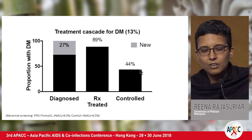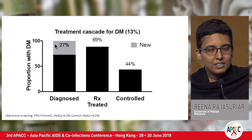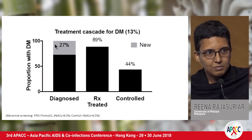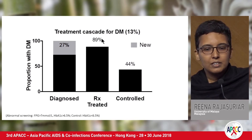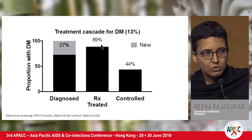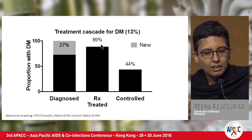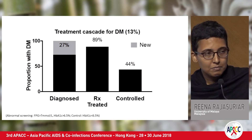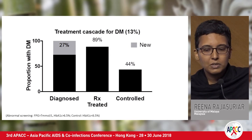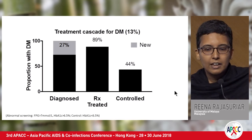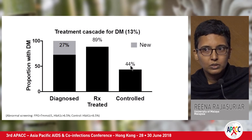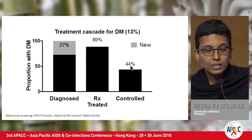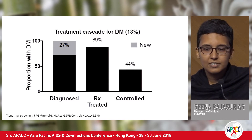For diabetes, we had missed 27%. Eighteen months later, 89% of those diagnosed were on treatment, and 44% had controlled HbA1C levels.